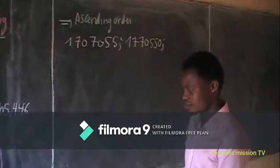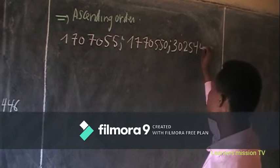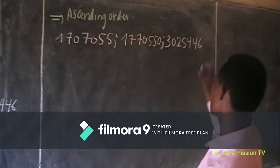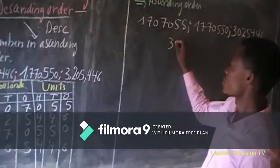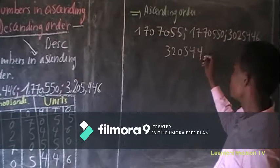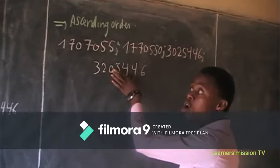Next: 4,325,444 — then three, zero, two, five, four, four, six, six. The last and greatest one is three, two, zero, five, four, five, four, six, six. These numbers are arranged from the smallest to the greatest — ascending order.